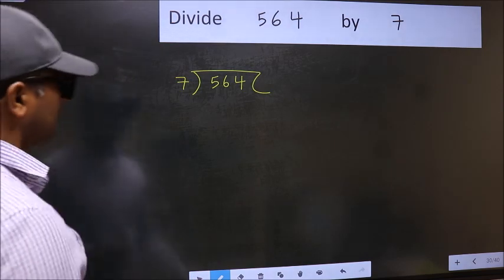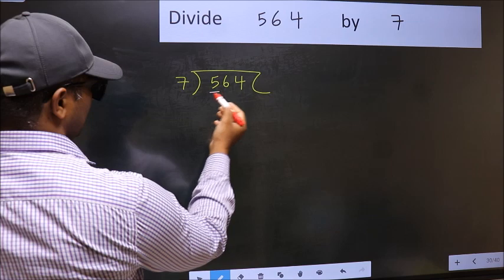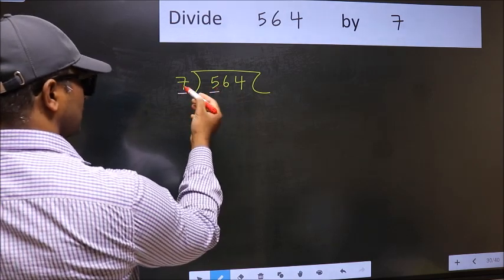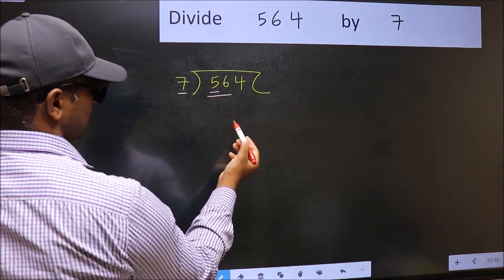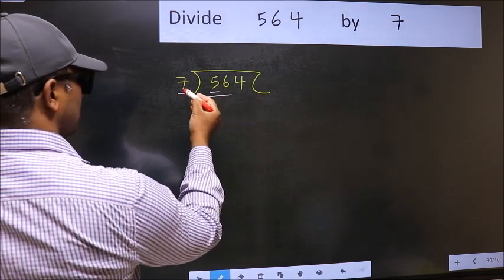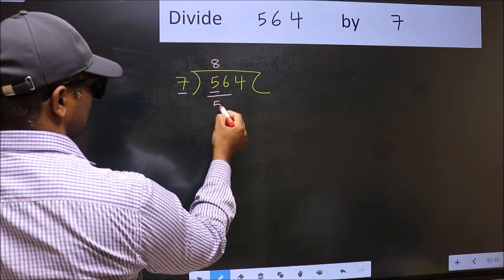Next. Here we have 5 and here 7. 5 is smaller than 7. So we should take two numbers, 56. When do we get 56 in 7 table? 7 times 8 is 56.